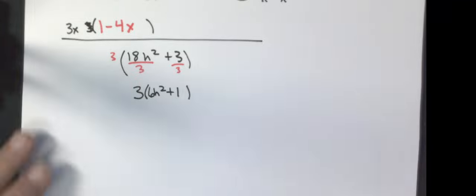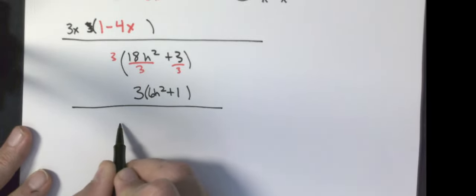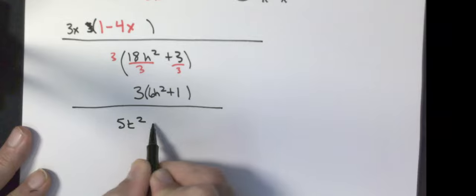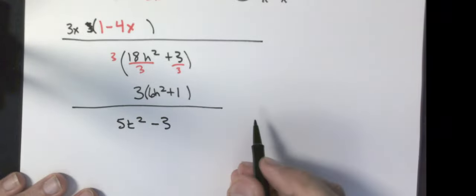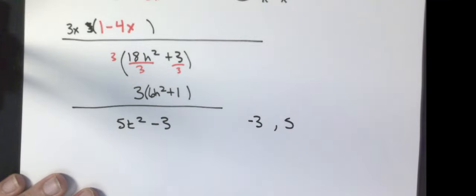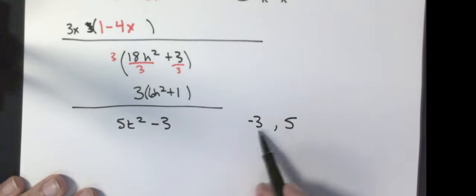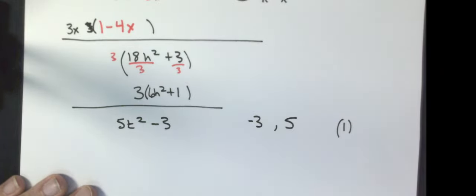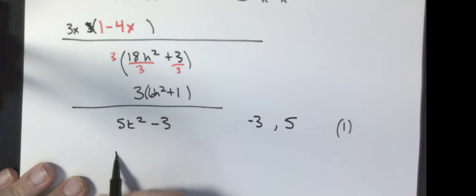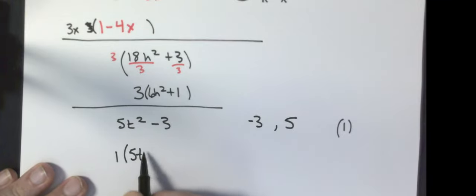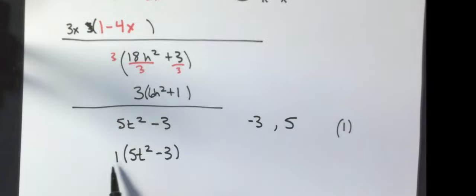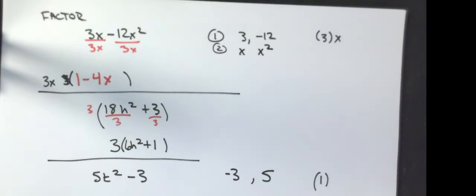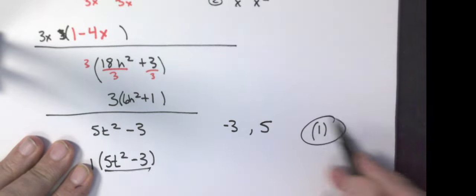The last example before iXL: factor 5t squared minus 3. What is the biggest number that goes into negative 3 and 5? Nothing goes into both except 1. If the GCF is 1, you could write 1 times (5t squared minus 3), but that 1 just disappears. When doing iXL, be careful: if it says to factor, write the full factored expression. If it asks for the greatest common factor only, give just that number.